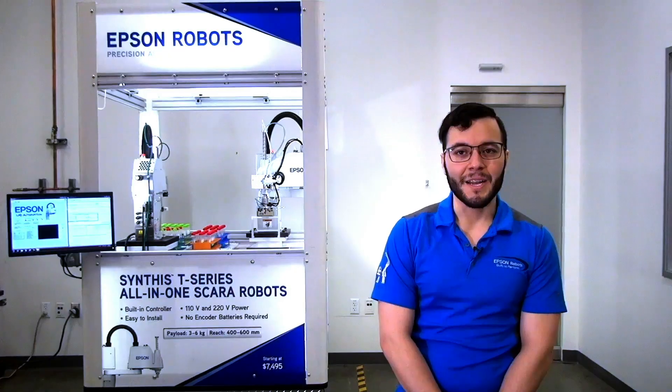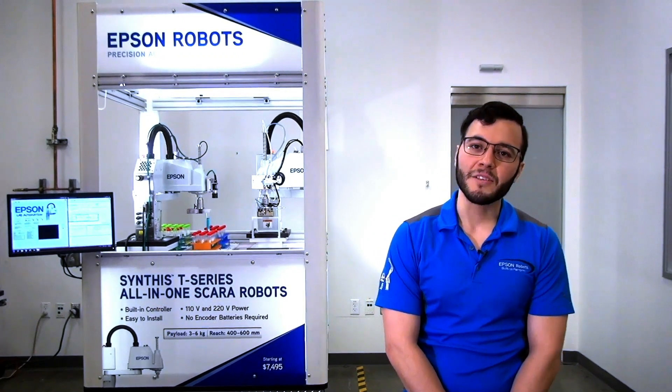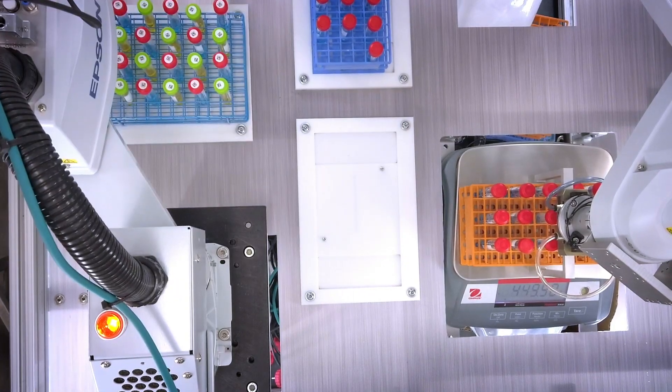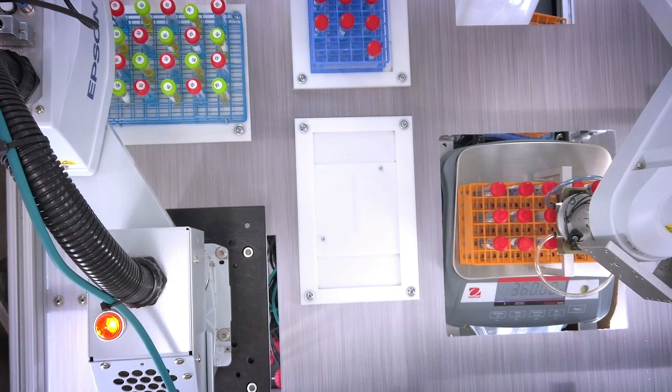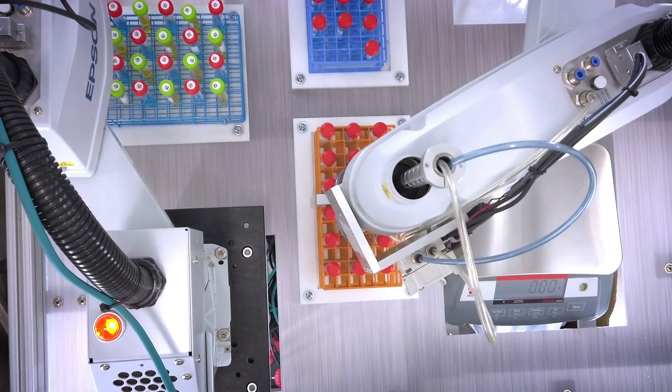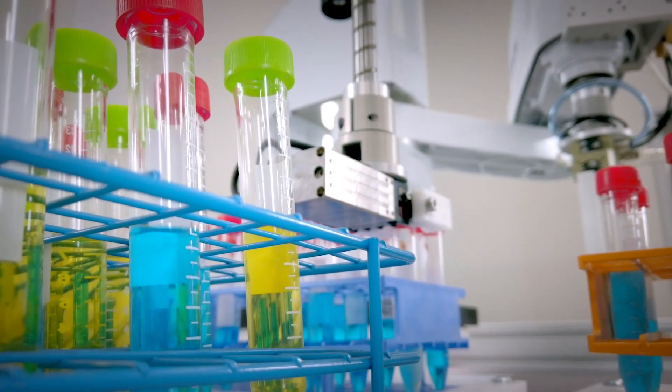The T6 robot is taking a test tube rack to a weight scale and verifying if the rack is fully populated. If it is not fully populated, then the robot returns the rack back to its original position and the T3 robot picks and places test tubes from a different rack and places them onto the moving rack.